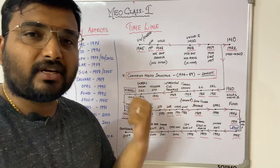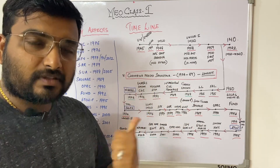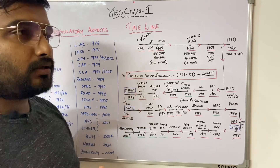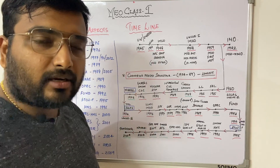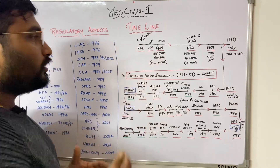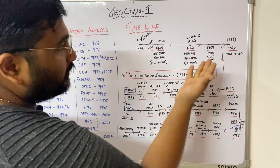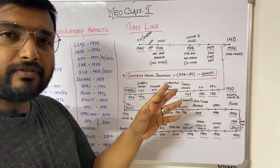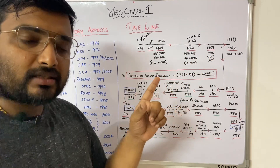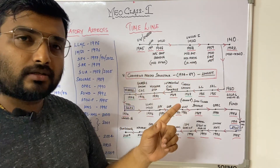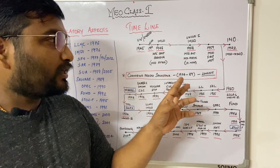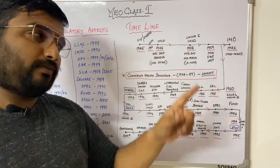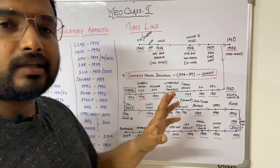In 1958 it came into force, and the following year in 1959 both the General Assembly and the Maritime Safety Committee met. This IMCO — the Intergovernmental Maritime Consultative Organization — changed its name to IMO in 1982; until then it was called IMCO.